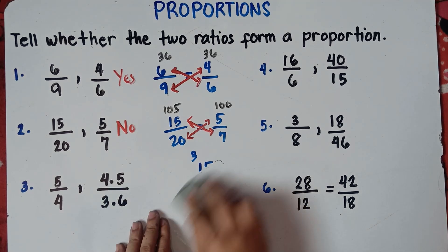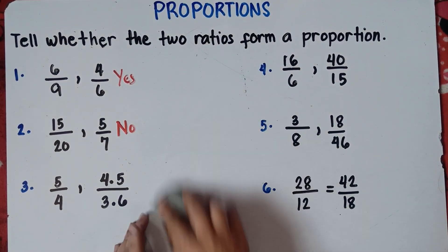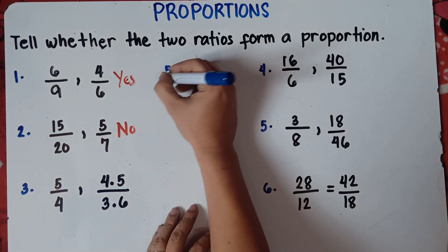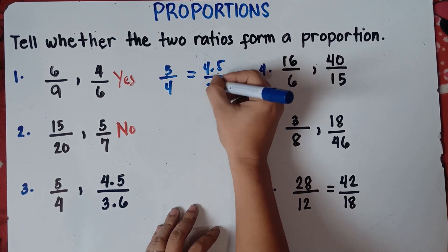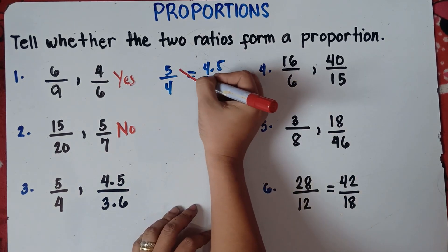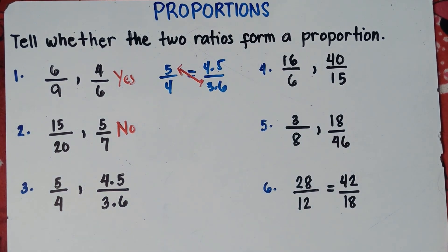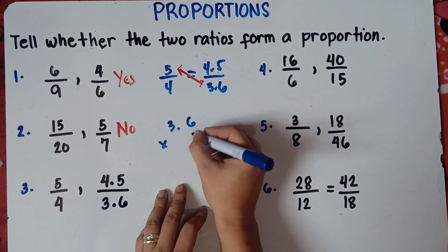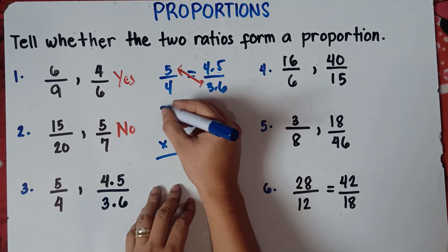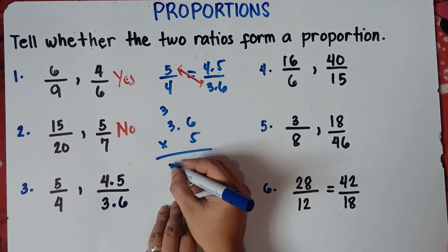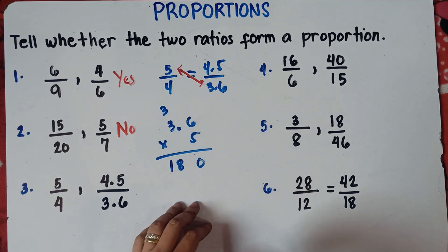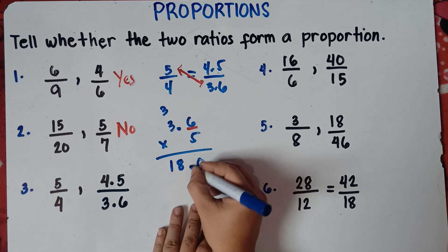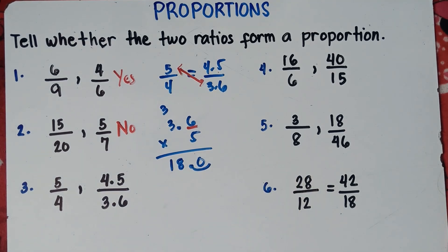Let's try number three. The given is 5 over 4 and 4.5 over 3.6, so 5/4 = 4.5/3.6. Let's check if these two ratios form a proportion. We multiply 5 times 3.6: 5 times 6 is 30, zero carry 3; 5 times 3 is 15, plus 3 is 18. We count one decimal place and move one unit from right to left, so the answer is 18.